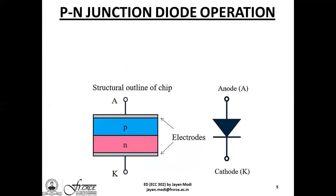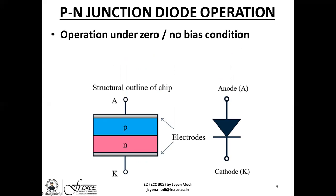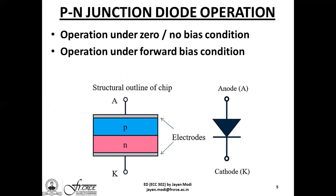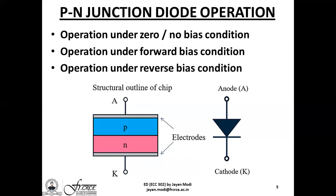This is a simple revision about the PN junction diode operation. The PN junction diode has three modes of operation: first, operation under zero or no bias condition; second, operation under the forward bias condition; and third, operation under the reverse bias condition.